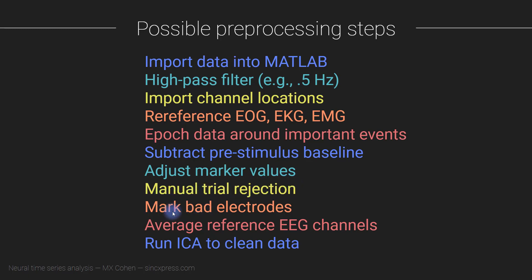Then you can mark the bad electrodes and make a decision about what to do with particularly noisy or broken electrodes, depending on the kinds of analyses you're doing and how you'll be aggregating data across individuals. Maybe you want to interpolate the bad electrodes, or maybe you just remove them altogether from the dataset.